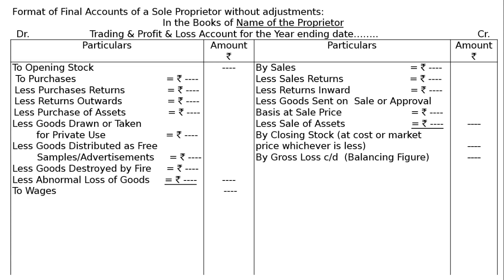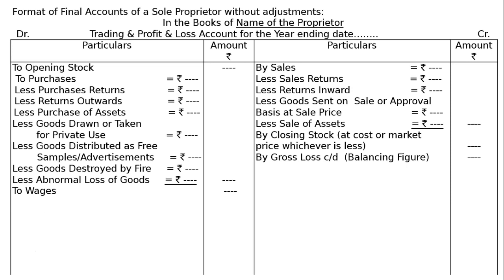Then 'to wages' — wages is a trading expense. If the heading is 'wages and salaries' (wages first, salary second), it goes in the trading account, indicating more wages and negligible salary. For example, ₹9,000 wages and ₹1,000 salary — total ₹10,000. However, 'salaries and wages' — where salary dominates — is shown in the profit and loss account.